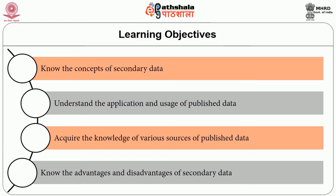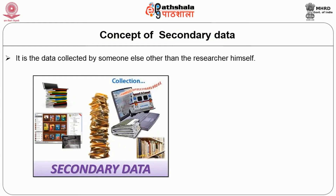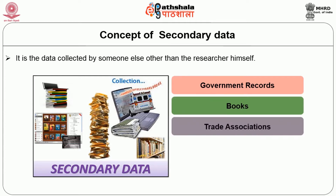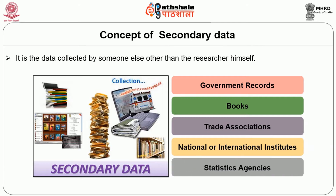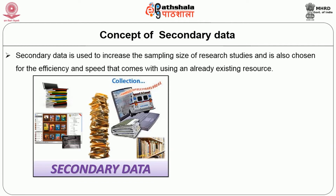This module is designed to give you the usage of published data and its application in your research work. Secondary data is the data collected by someone else other than the researcher himself. This data can be gathered from government records, books, trade associations, national or international institutes, statistics agencies, etc. Secondary data is used to increase the sampling size of research studies and is also chosen for the efficiency and speed that comes with using an already existing resource.